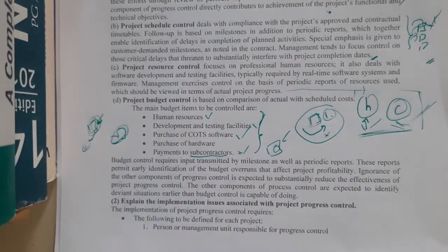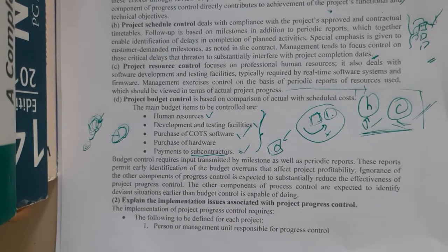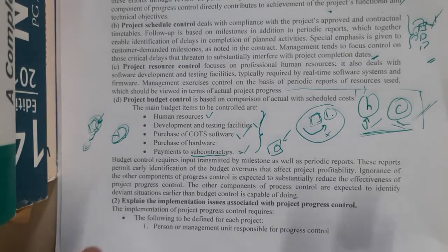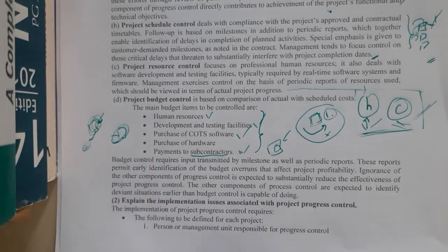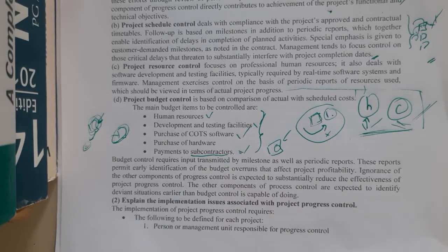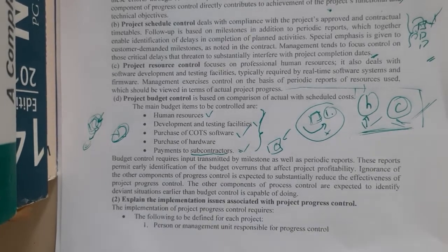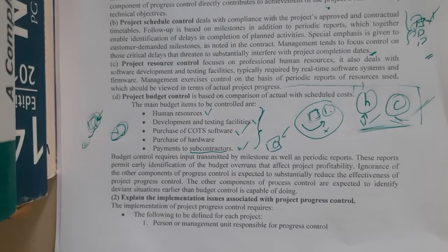These are the four main components of management control of project progress. I hope everyone got a basic idea. Please also go through the textbook, as it is always a better option to verify the answers in terms of length and accuracy. Let us meet in the next lecture, which will be a review video of this particular unit. Thank you for watching.